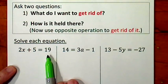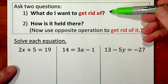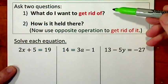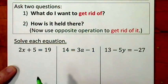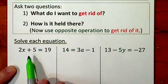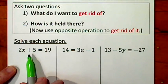Even when the equations are a little bit more involved, I still have these two concerns. What do I want to get rid of? How is it held there? In general, if something's being added or subtracted, that's the easiest thing to get rid of first.